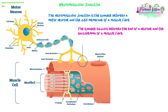We're going to look at how we get that action potential coming from the motor neuron, how it crosses that junction — the gap between the neuron and the muscle fiber — and then how that starts to lead to a contraction. The synapse is actually between the end of a neuron, the synaptic end, and the sarcolemma of the muscle fiber.